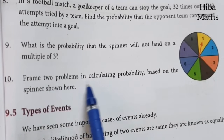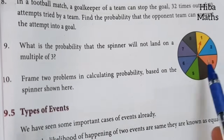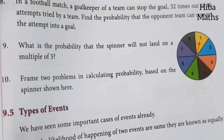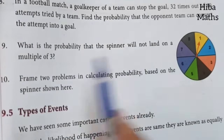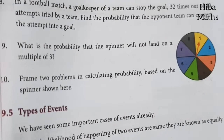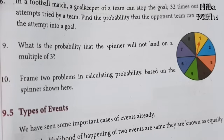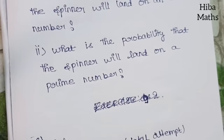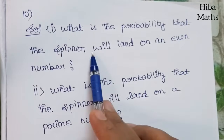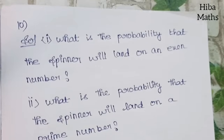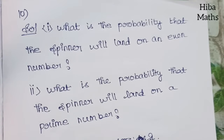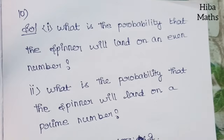Tenth question: frame two problems in calculating probability based on the spinner shown. For example: What is the probability that the spinner will land on an even number? Even numbers are 2, 4, 6, 8, giving 4 by 8 equals 1 by 2. Or: What is the probability that the spinner will land on a prime number? These are sample problems you can frame using the spinner. Thank you so much for watching. Bye.